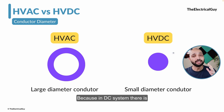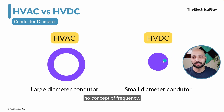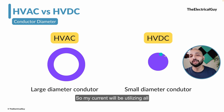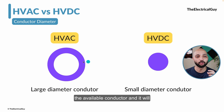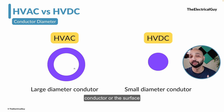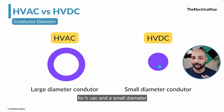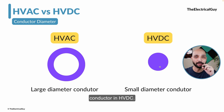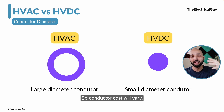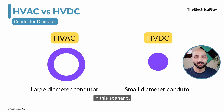In a DC system, there is no concept of frequency, so the current utilizes all the available conductor and does not concentrate on the surface. To transmit a similar amount of power, I will need a large diameter conductor for HVAC and a small diameter conductor for HVDC. So conductor cost will vary between the two systems.